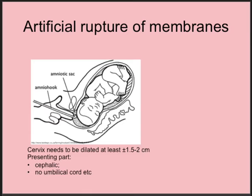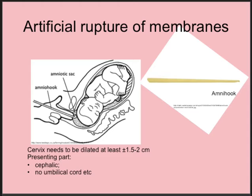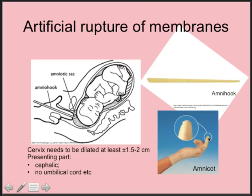Artificial rupture of membranes: fingers are inserted through the cervix, make contact with the presenting part, and you check that you don't feel anything untoward such as vasa previa or an umbilical cord. Then with a special amni-hook you scratch the membranes, break them, and the amniotic fluid escapes. This requires dilatation of at least one and a half to two centimeters and a clearly engaged presenting part. The amni-hook is a plastic disposable instrument with a small sharp tip, or alternatively an amni-cot worn on the index finger.